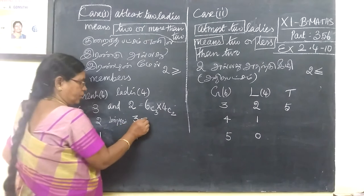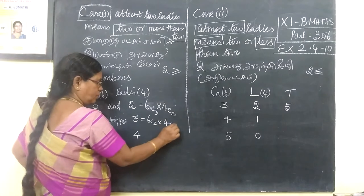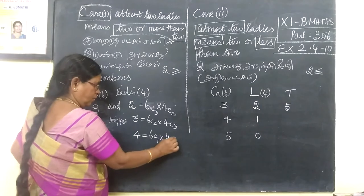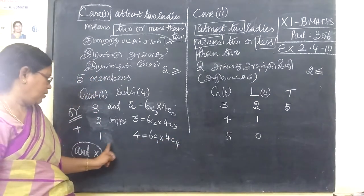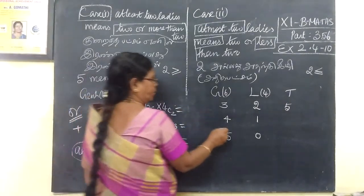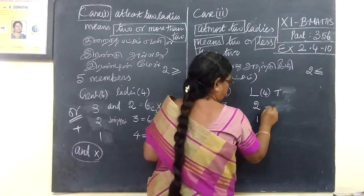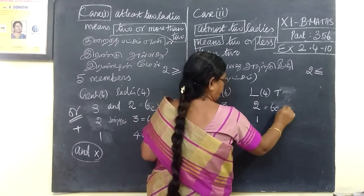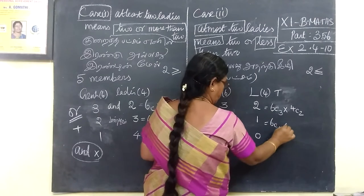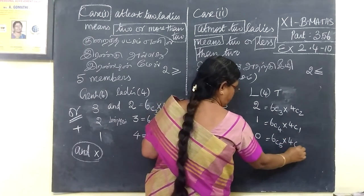We are going to get C(6,2) into C(4,3). This is C(6,1) into C(4,4). We are going to get a number of 6. That's C(6,3) into C(4,2). Then C(6,4) into C(4,1).